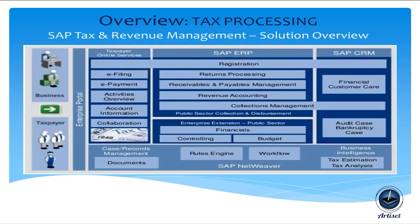This is an overview of the TRM solution, which involves three main processes: registration, return, and assessment. Registration can be done by both the taxpayer and the tax officer. Taxpayers register through a portal where they can file returns, make e-payments, view account information, and check when payments or ICRs are due.